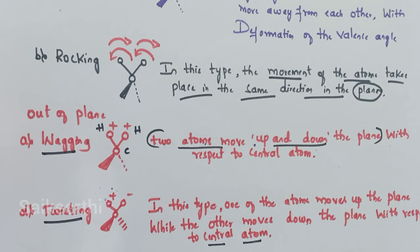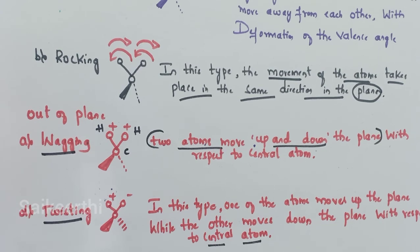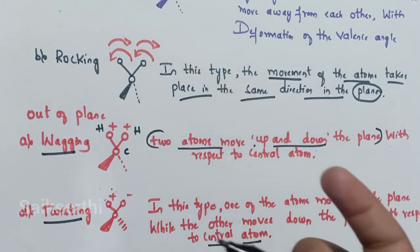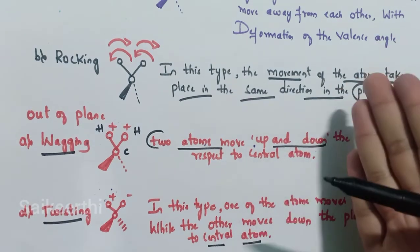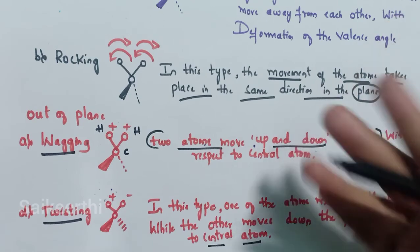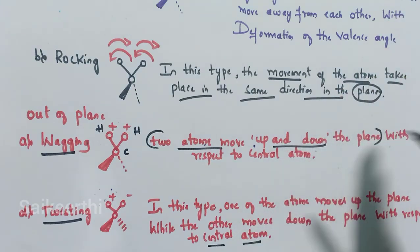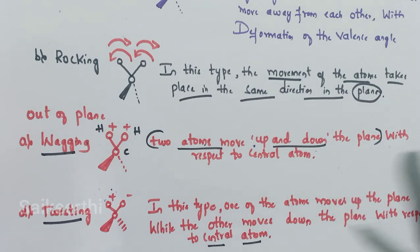An important point: in a molecule containing more than two atoms, all four types of vibrations may be possible. However, only those vibrations that result in a change in the dipole moment of the molecule are observed in the infrared spectrum — they will give bands or peaks in infrared spectroscopy. This concludes the discussion on normal modes of molecular vibrations in infrared spectroscopy.